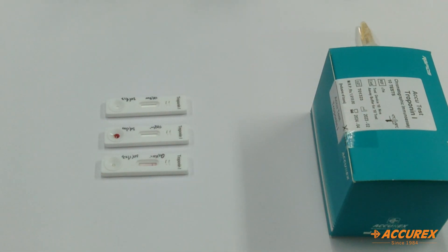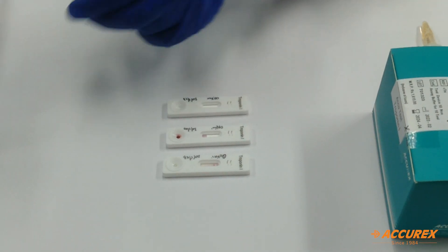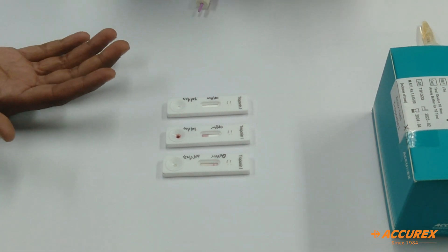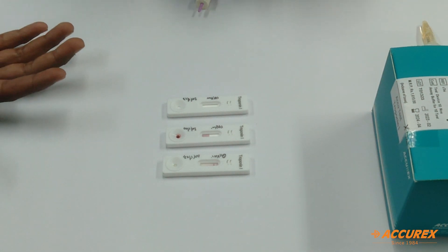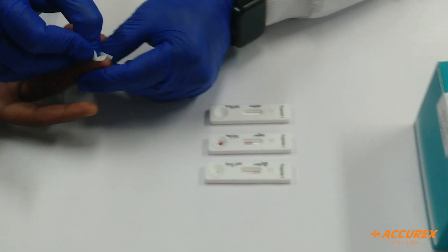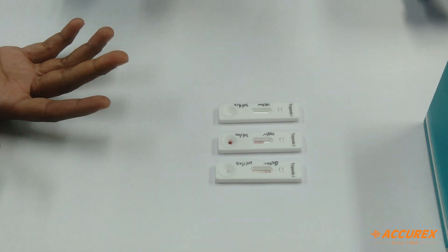Next we will try with finger prick sample. For finger prick sample, first we will clean the surface area of the finger properly with the alcohol swab. Allow it to dry for some time, then we will prick.